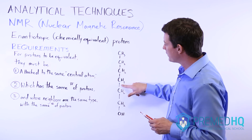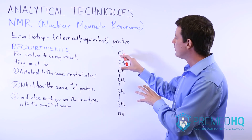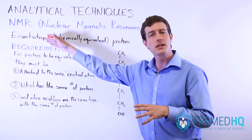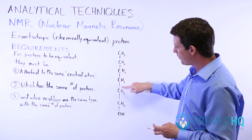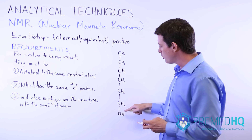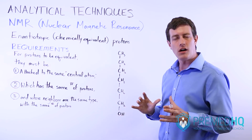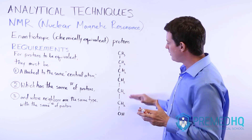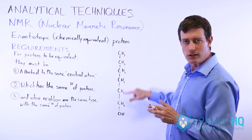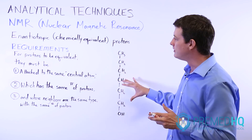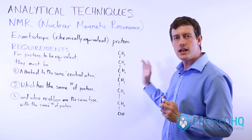Once you understand those three conditions, you can go through a compound and identify which protons are chemically equivalent or enantiotopic, which is very important when analyzing an NMR plot. Let's go through this compound — it has six carbons and an OH group at the end.